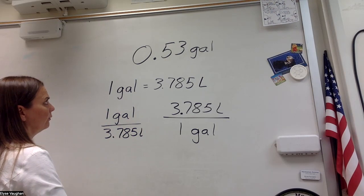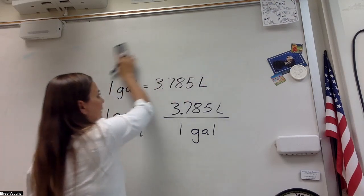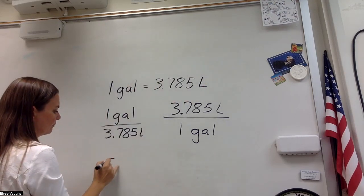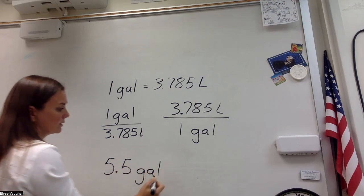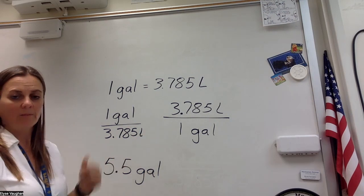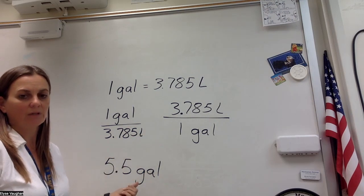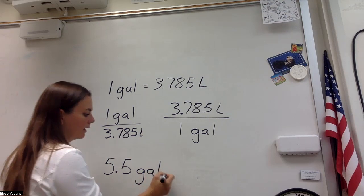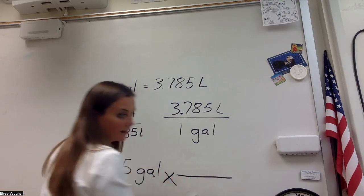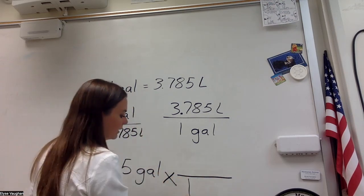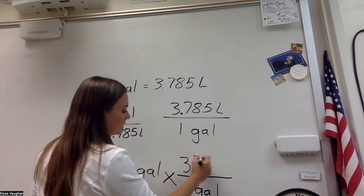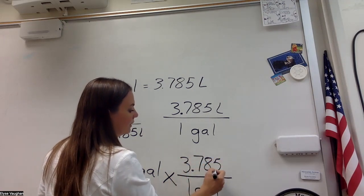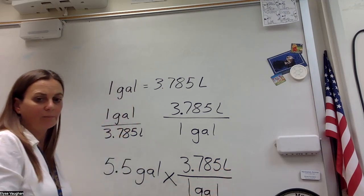So now I'm being asked to convert my bucket that holds 5.5 gallons into liters. So it's the same conversion factor. But this time, because I'm converting from gallons to liters, and I want to get rid of gallons, I'm going to use the conversion factor that has gallons on the bottom. So I'm going to have one gallon on the bottom, and 3.785 liters on the top.